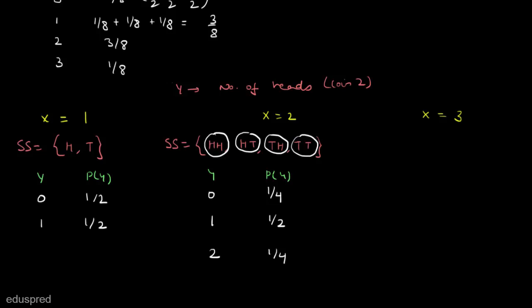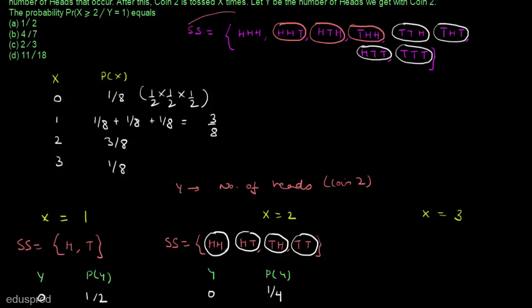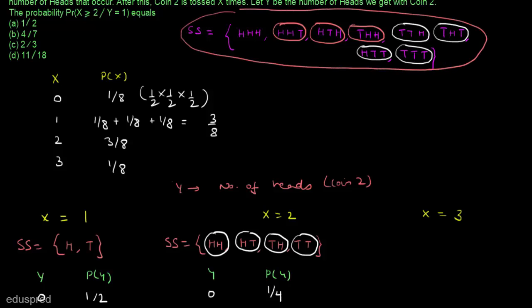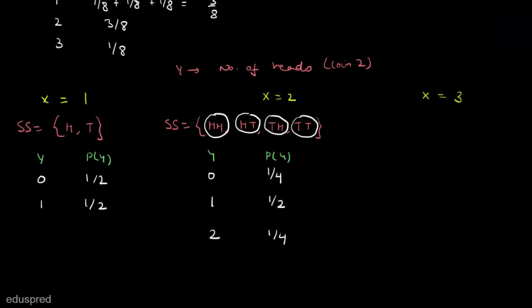When X equals 3, we toss coin 2 three times, giving the same sample space as before for three tosses. The possible values of Y are 0, 1, 2, and 3, with corresponding probabilities 1/8, 3/8, 3/8, and 1/8.